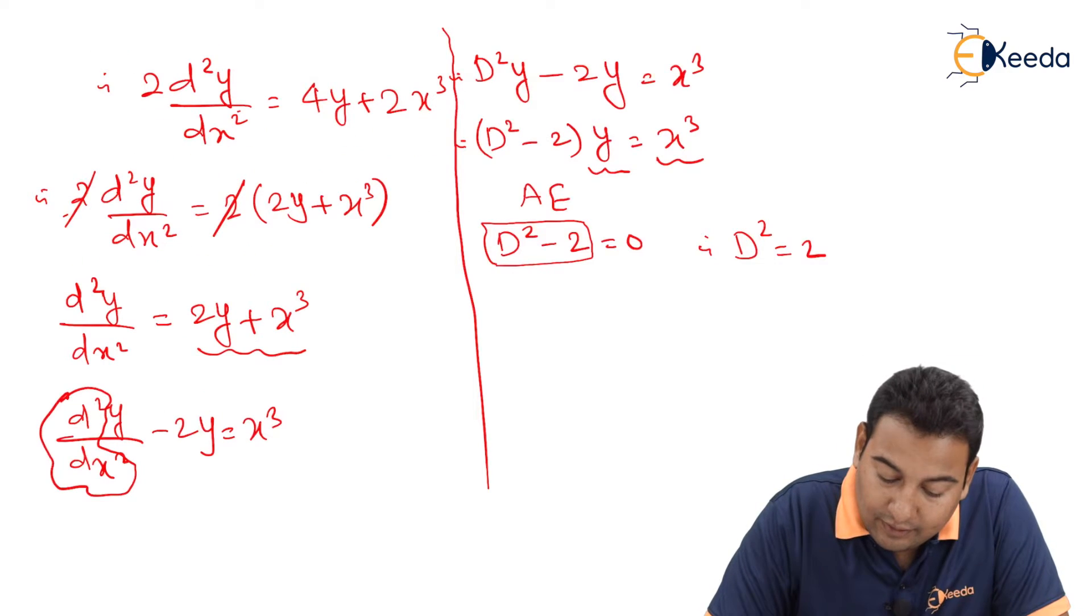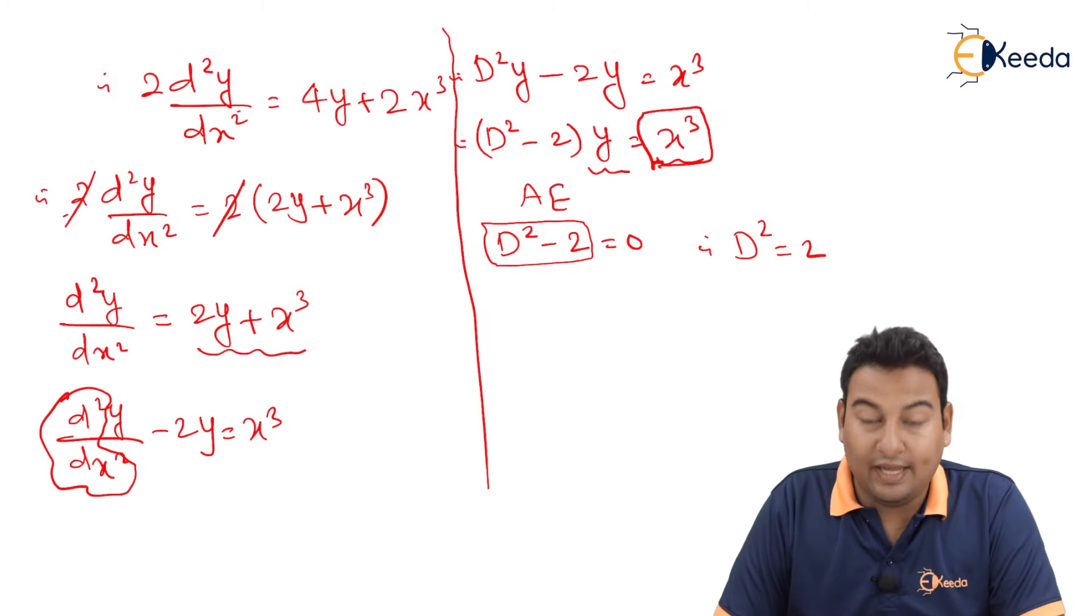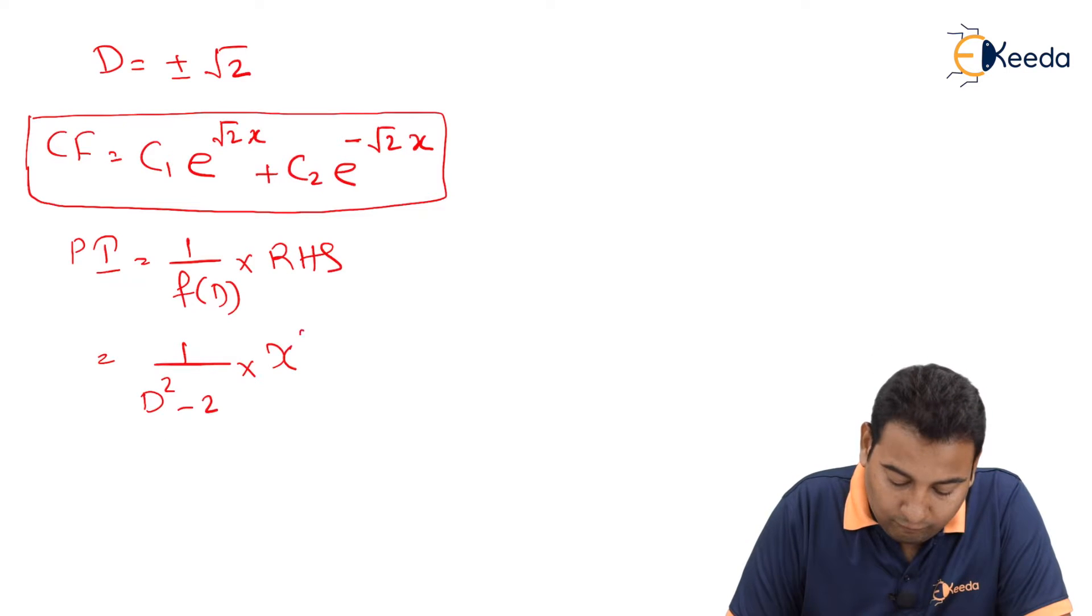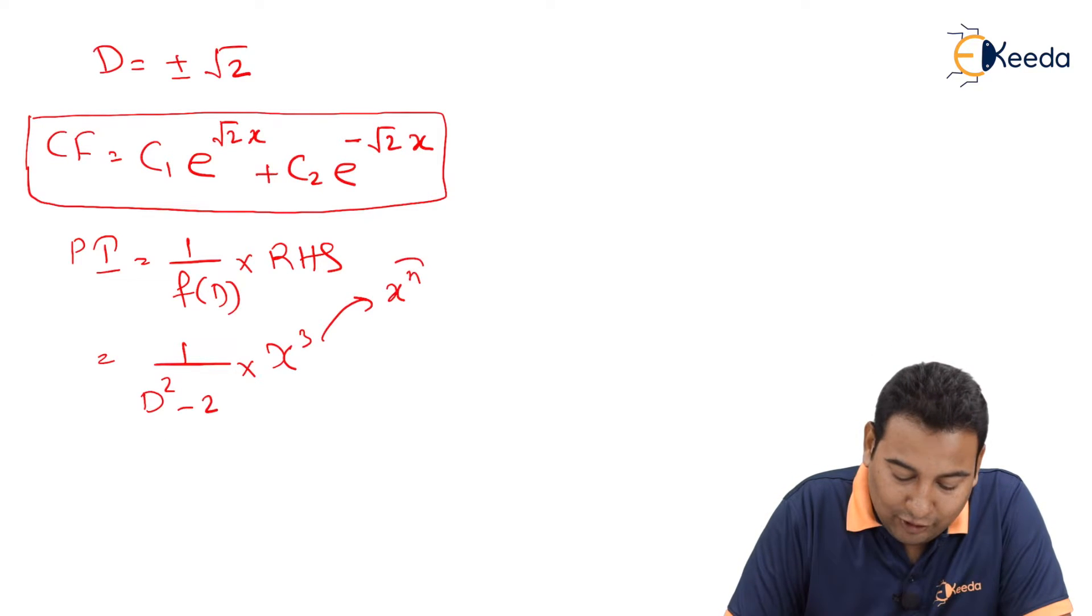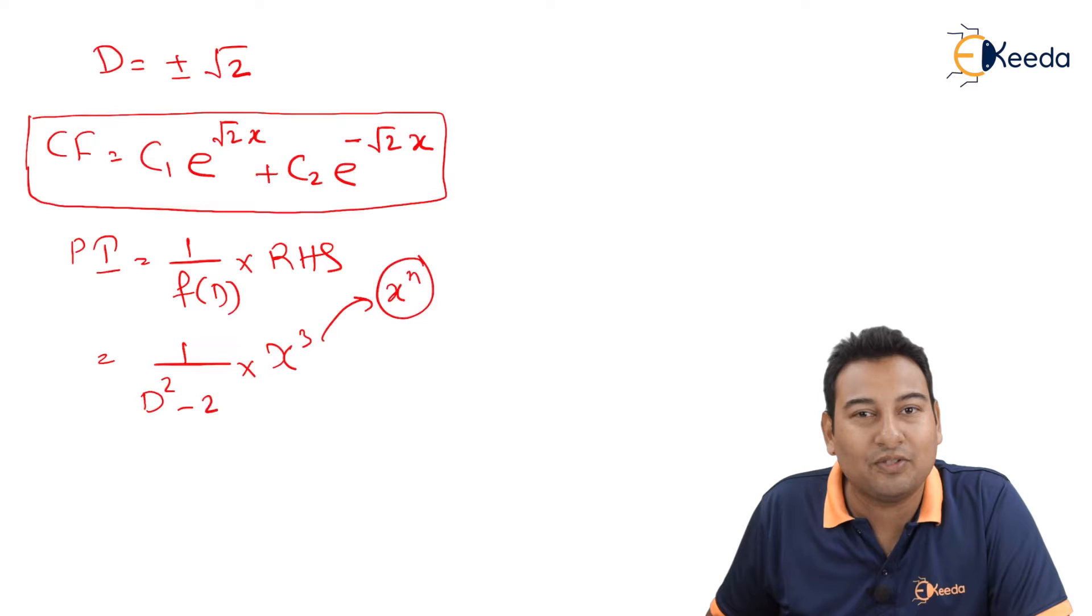RHS friends here is x cube, which is in the form x raised to n. Remember the steps. What are the steps?